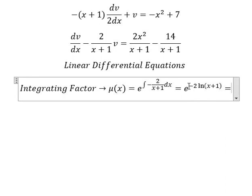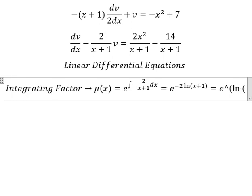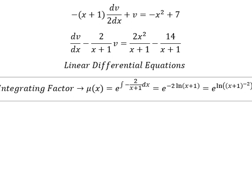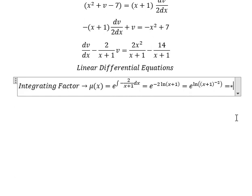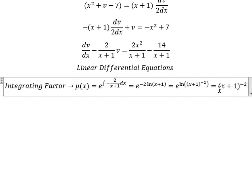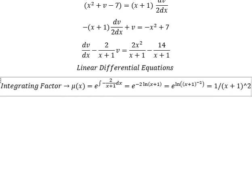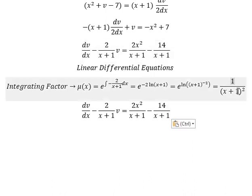I will put the negative two inside the natural log. So that should simplify to x plus one to the power of negative two, which we can write as one over (x plus one) squared. That means we multiply both sides by this integrating factor.